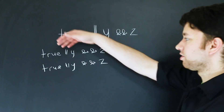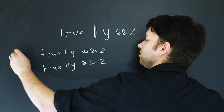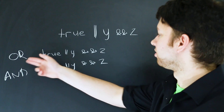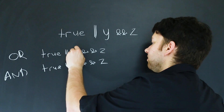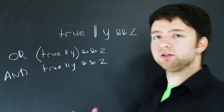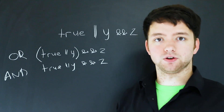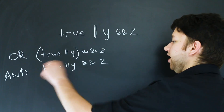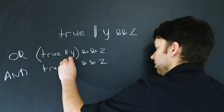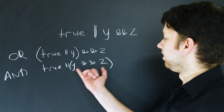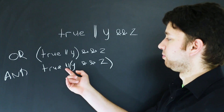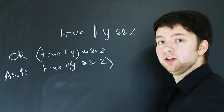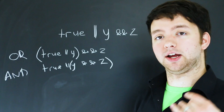If the OR happens first, it's going to look like this — with parentheses causing things to be evaluated first. If AND happens first, it's going to look like this instead. So we have two scenarios: OR first, and AND first. Now this value in parentheses — true OR y — is always going to be evaluated as true.